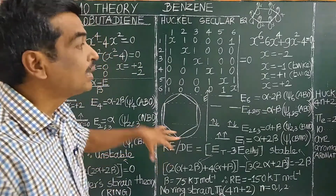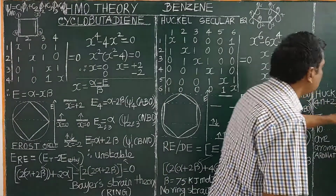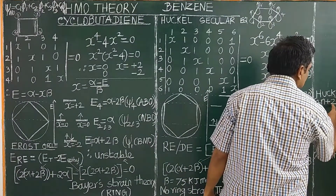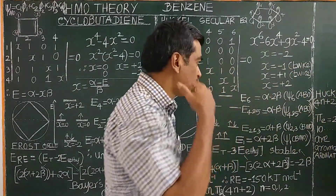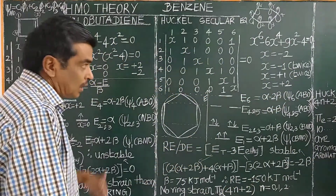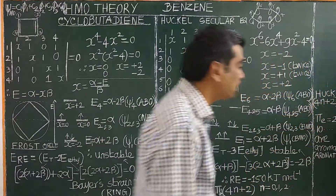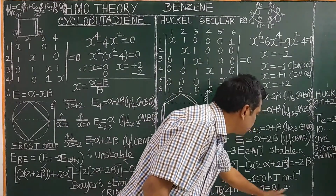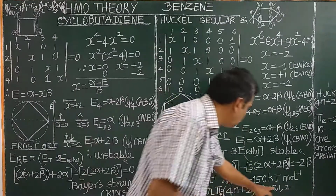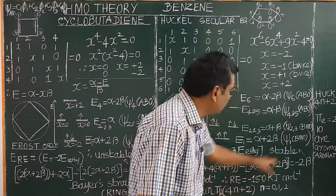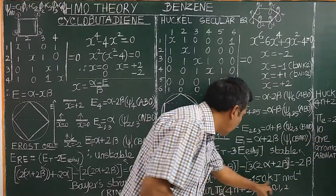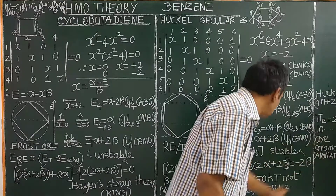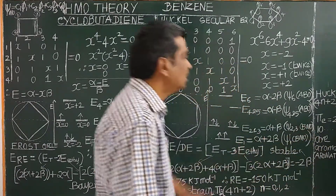Based on HMO theory, Hückel formulated the 4n+2 rule of aromaticity. Molecules which follow this rule are very stable. The number of pi electrons equals 4n+2, where n is an integer: 0, 1, 2, 3, etc. If n = 0, pi electrons = 2. If n = 1, pi electrons = 6, which is the case for benzene. If n = 2, pi electrons = 10, and so on.